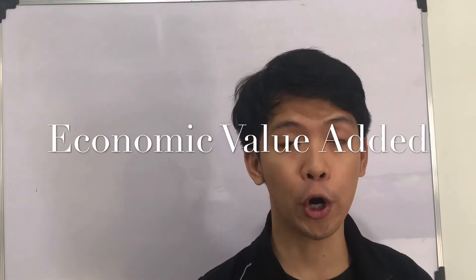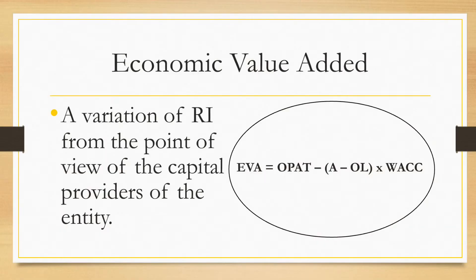Another variation of the residual income is the Economic Value Added, or EVA. This is a variation of RI, but from the point of view of the capital providers, rather than from the top management's point of view. The formula for the Economic Value Added is EVA equals operating profit after tax, this is before deduction of interest and taxes, less assets minus operating liabilities, times weighted average cost of capital.